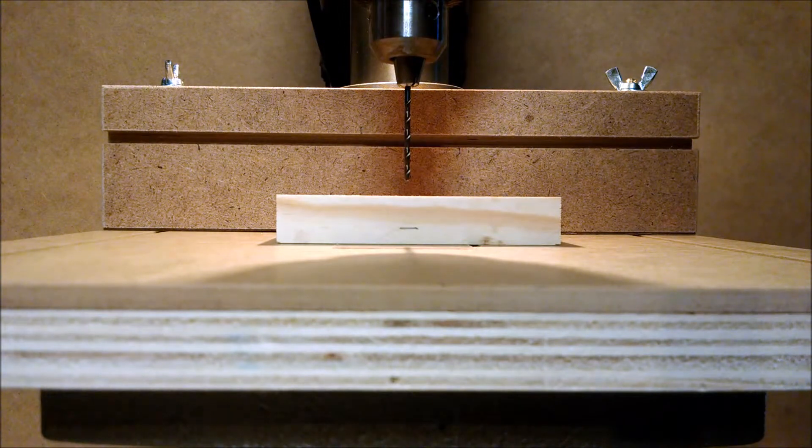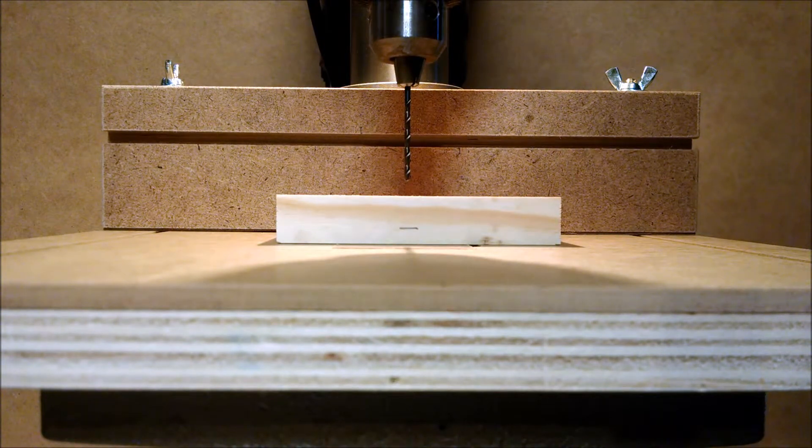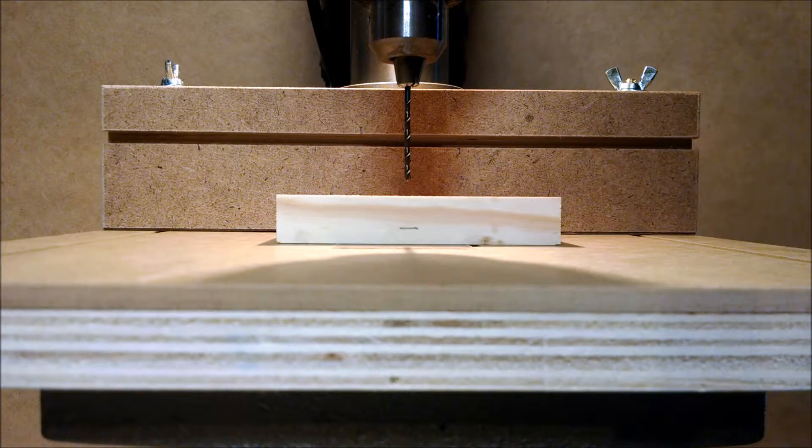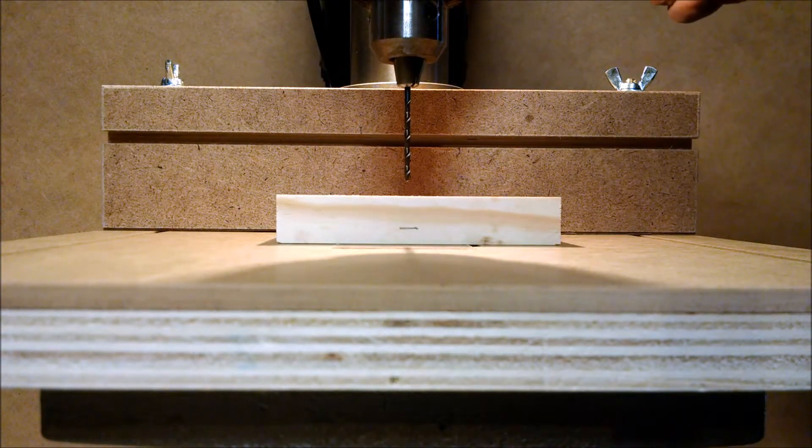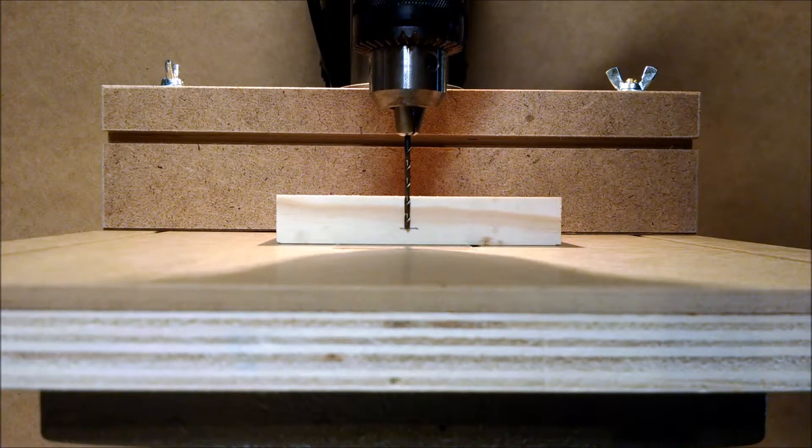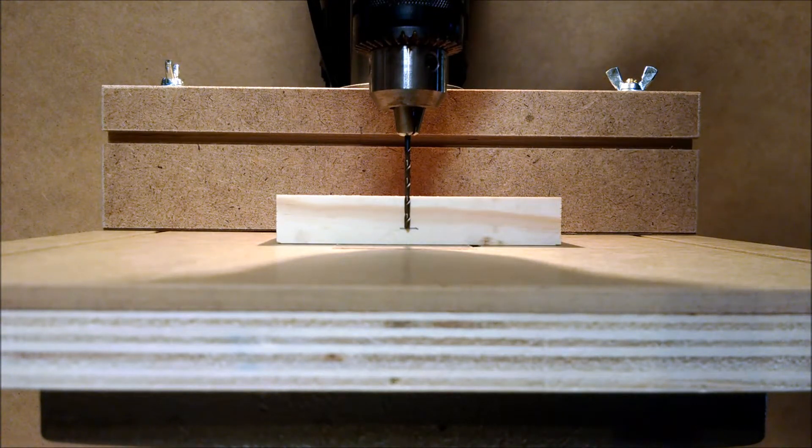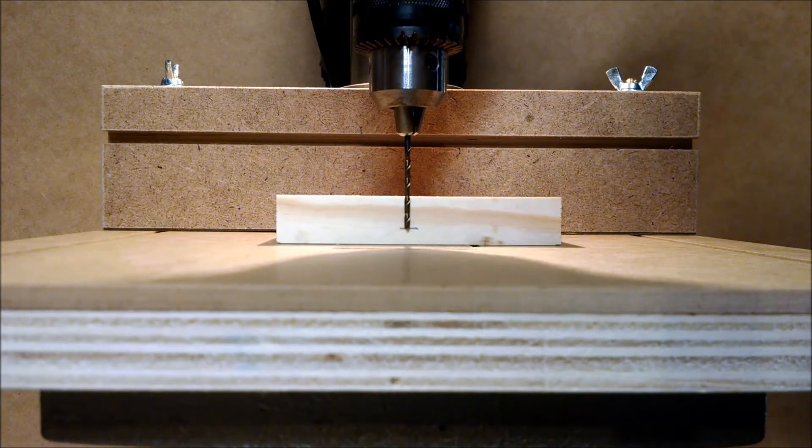Okay, I've repositioned the camera now so that we can check to see whether we will indeed be drilling an accurate half-inch deep hole. So I'm just going to lower that bit to where we set the depth stop, and you can see it stops right at that half-inch mark that I drew on the workpiece. So we've accomplished our goal.